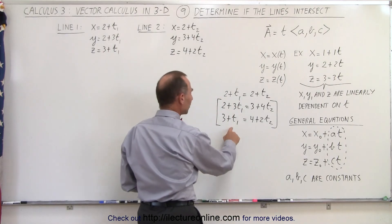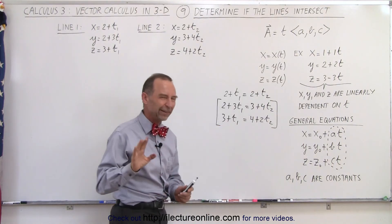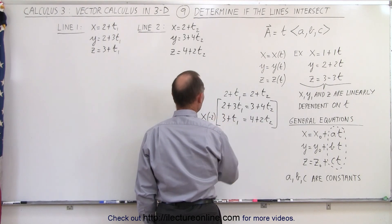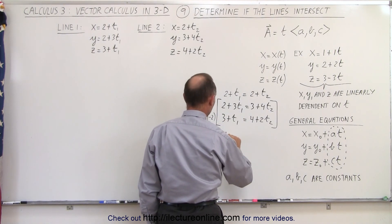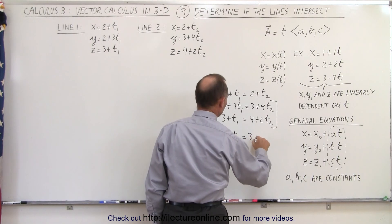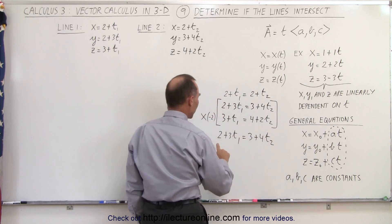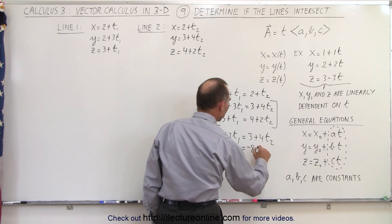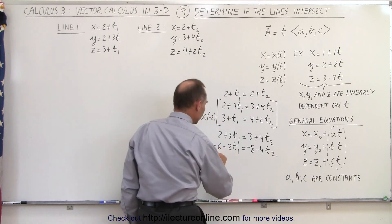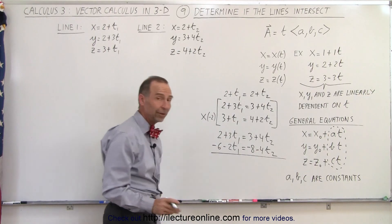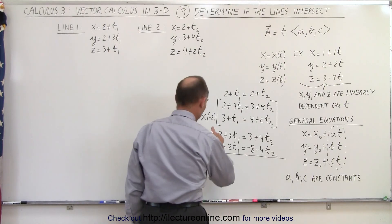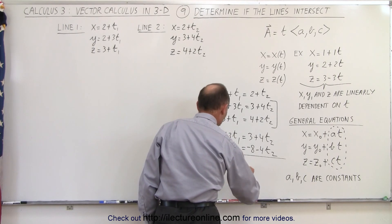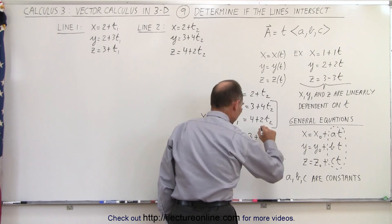A better approach: multiply the bottom equation by negative 2 and add the two equations together — that will be a little bit cleaner. The top equation remains unchanged: 2 plus 3t1 equals 3 plus 4t2. The bottom equation now becomes minus 6 minus 2t1 equals minus 8 minus 4t2. When we add the two equations, the t2 terms cancel out, leaving just one unknown. So 2 minus 6 is minus 4, and 3t1 minus 2t1 is plus t1, equal to 3 minus 8, which is minus 5.